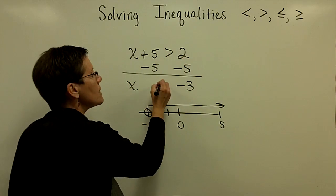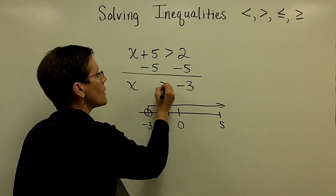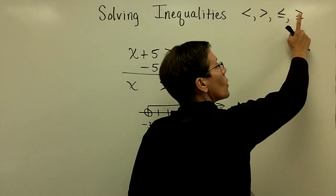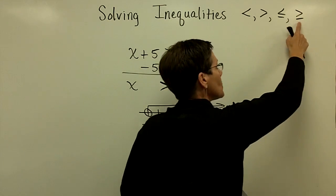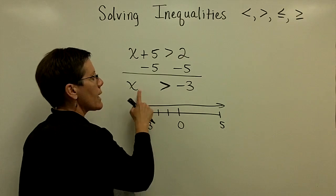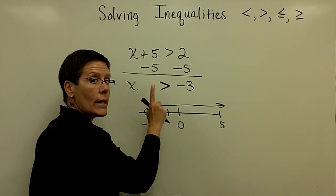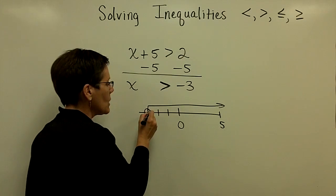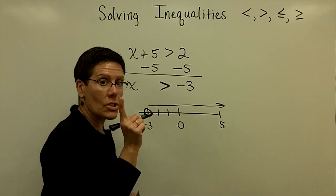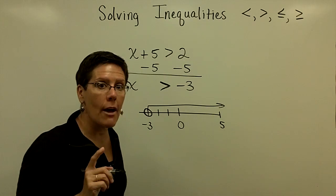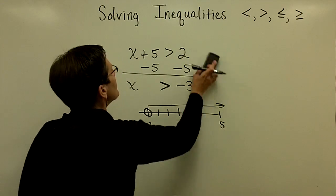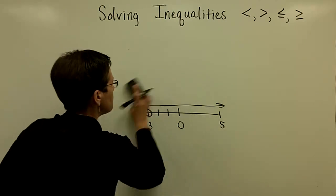So all of these values work. Because this is a greater than symbol and not a greater than or equal to symbol, x is just greater than 3, not equal to 3. So we have an open circle on the graph on this number line. Let's go ahead and do another.